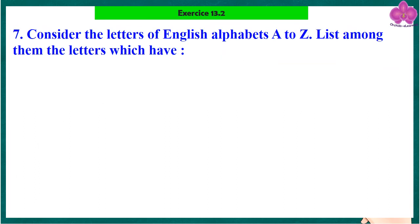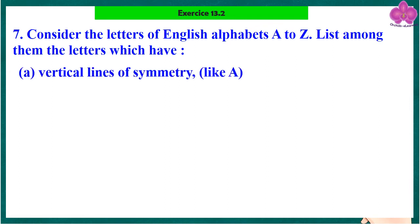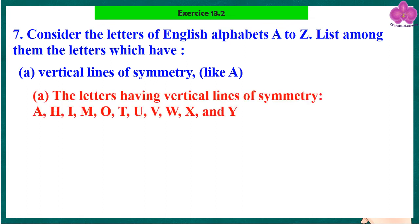Question 7: Consider the letters of the English alphabet A to Z. List the letters which have vertical lines of symmetry, like A. The letters having vertical lines of symmetry are: A, H, I, M, O, T, U, V, W, X, and Y.